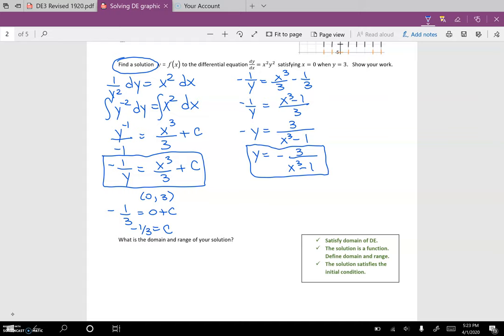Now let's just check the point 0, 3. Let's make sure it makes this equation true. So I'm going to substitute 0, 3. So 3 equals negative 3 over 0 cubed minus 1. So does 3 equal a negative 3 over negative 1? It sure does. Fantastic.